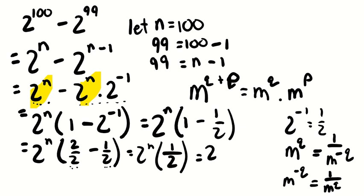And then we will end up with something like this, 2 to the power of n over 2. 2 to the power of n over 2 is the same as 2 to the power of n minus 1. And we know that 2 to the power of n minus 1 is equal to 2 to the power of 99. Because n minus 1 is equal to 99. And that's basically the solution.